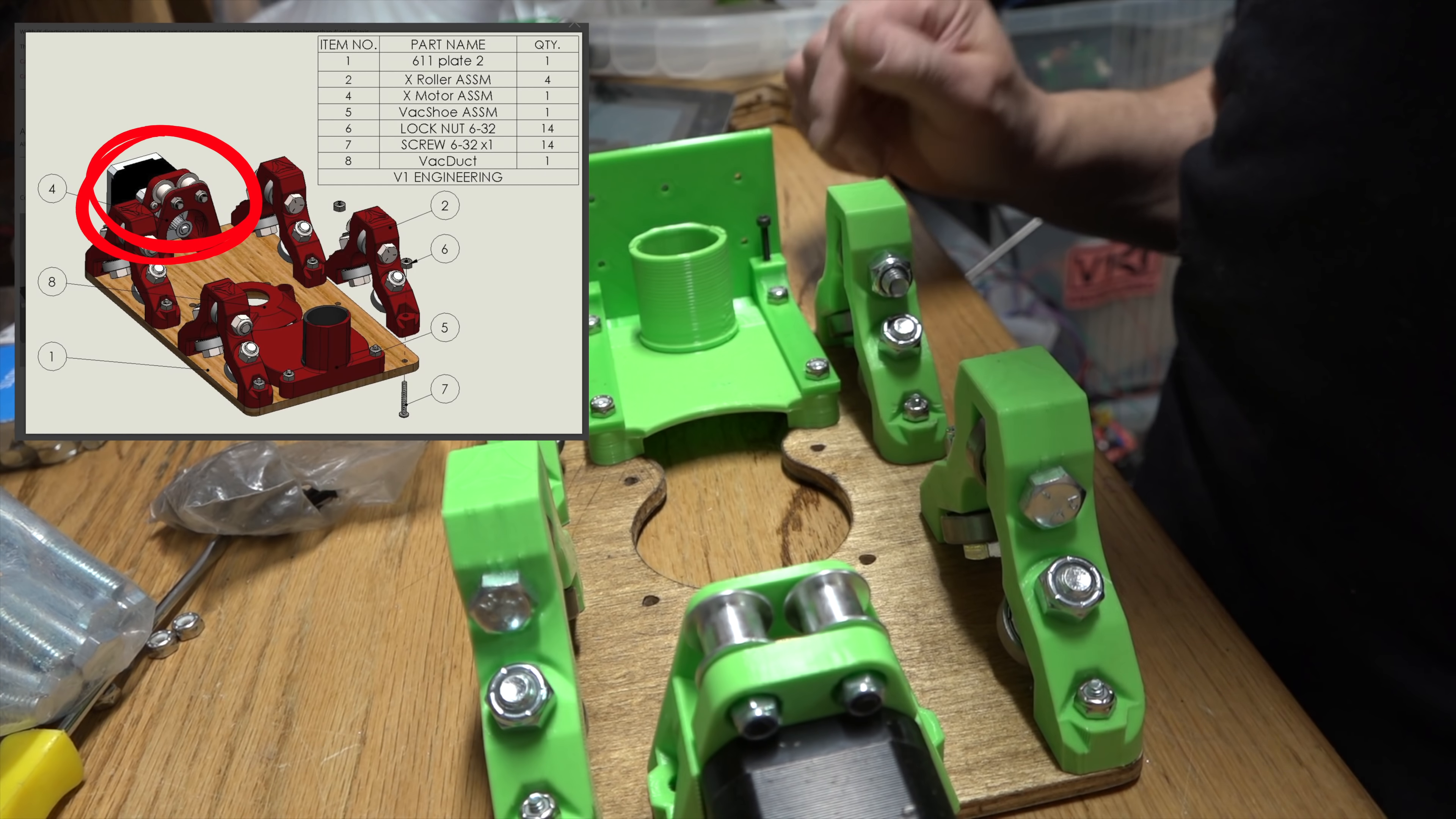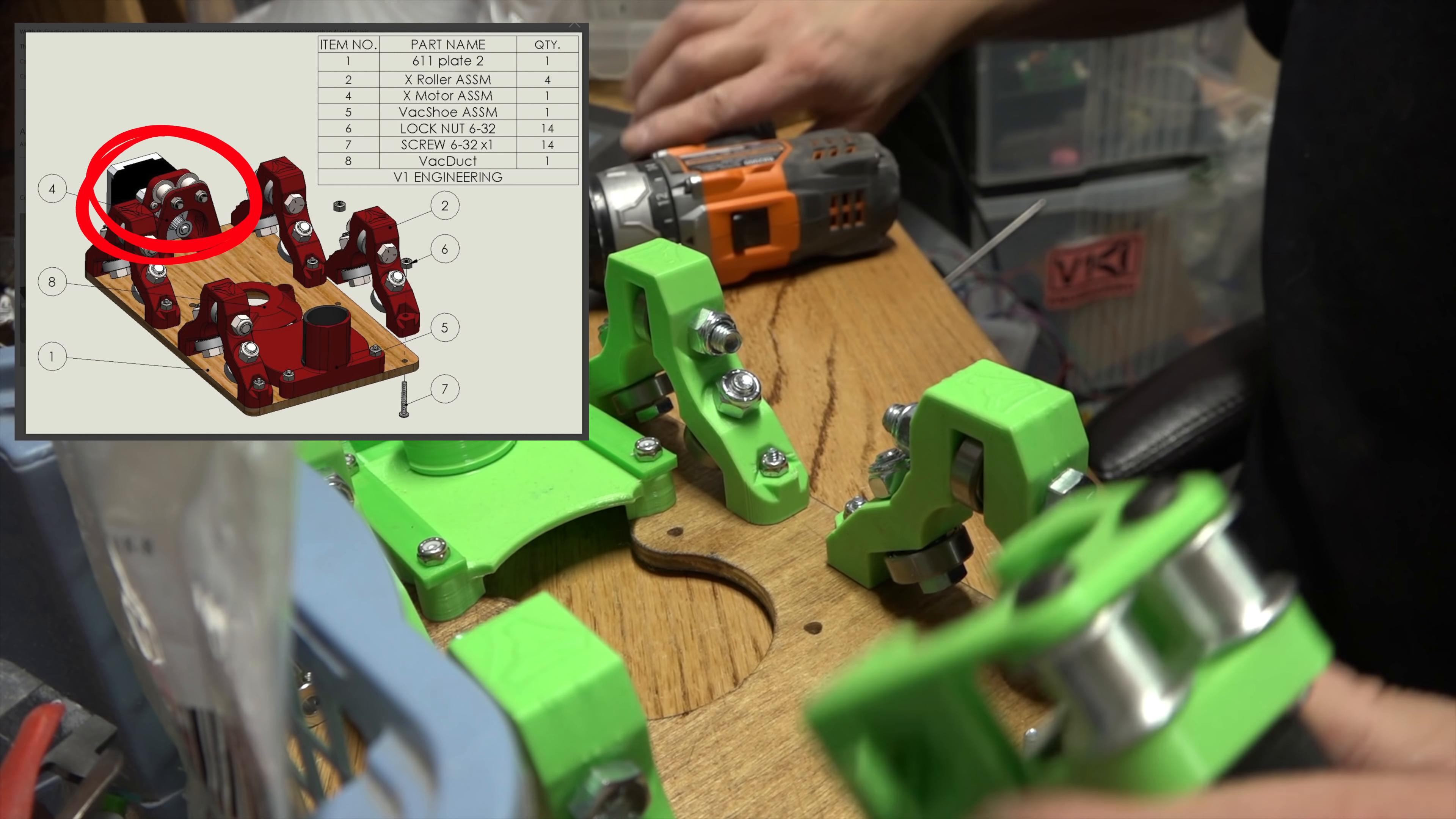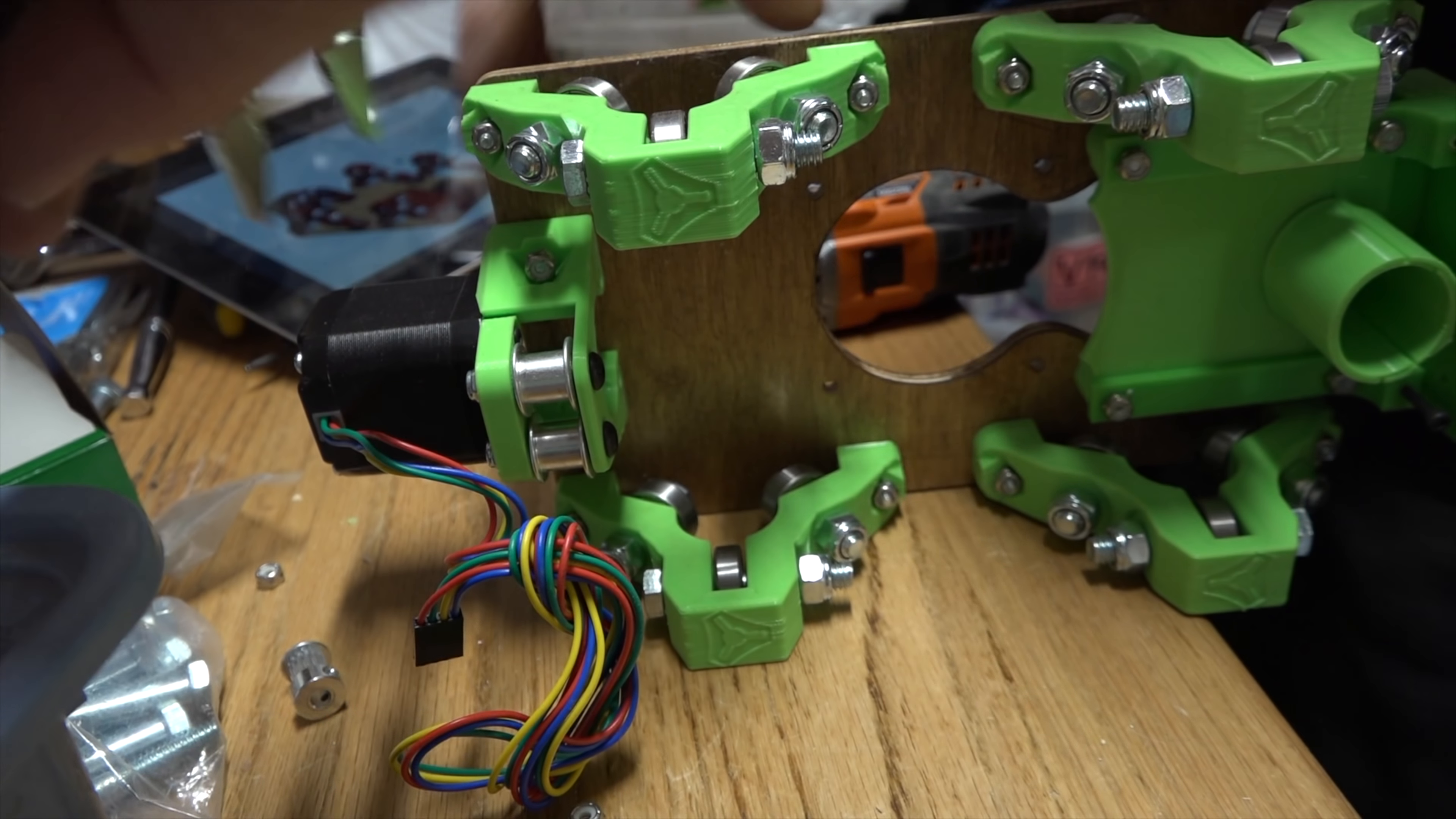The other mounts in here are for the router base. So let's go ahead and grab a couple 6x32 by 1 inch. We'll do the same thing over here, just hold that tight.